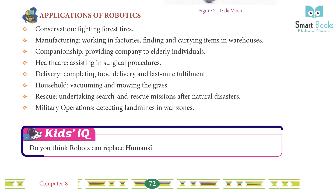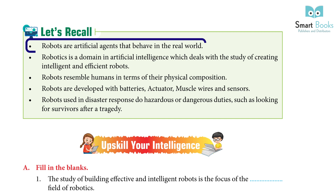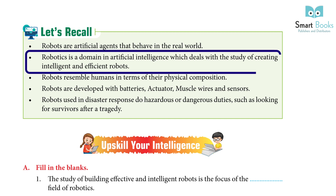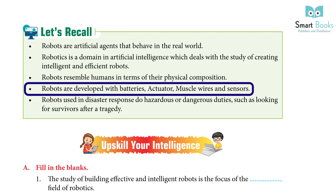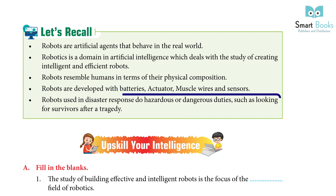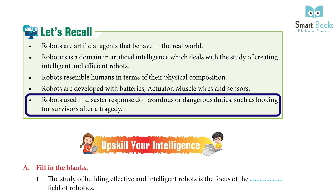Additional applications include rescue missions after natural disasters and military operations such as detecting landmines in war zones. Kids IQ: Do you think robots can replace humans? Let's Recall: Robots are artificial agents that behave in the real world. Robotics is a domain in artificial intelligence that deals with creating intelligent and efficient robots. Robots are developed with batteries, actuators, muscle wires, and sensors. Robots are used in disaster response for hazardous duties such as looking for survivors after a tragedy.